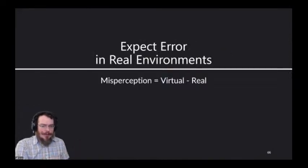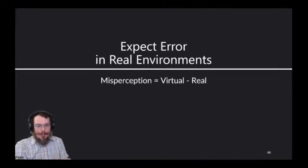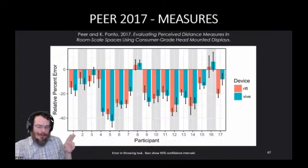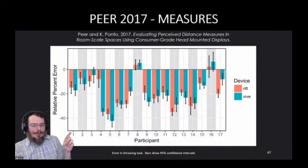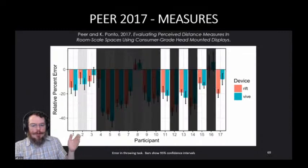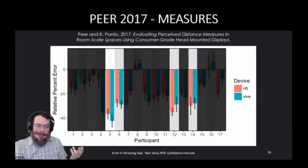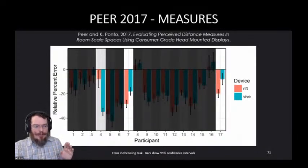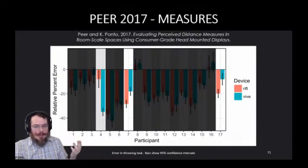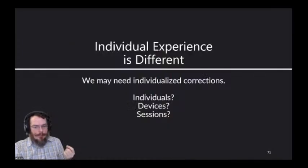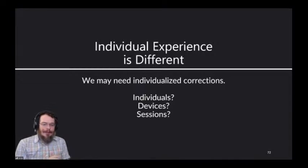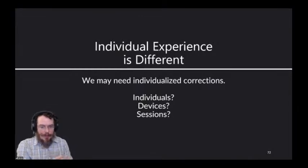In this work, we also saw differences between individuals, looking at individual participants' misperception just for the blind-throwing task. We see some overestimation, unexpected, some underestimation under 20 percent, that's kind of expected, some greater than 30 percent, which is kind of a lot, and sometimes very different mean error between devices. This is particularly surprising, as these devices are all but identical on paper. It seems participants were experiencing different degrees of misperception, and these corrections may need to be customized to an individual or a device or to a single VR session.